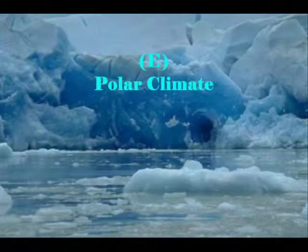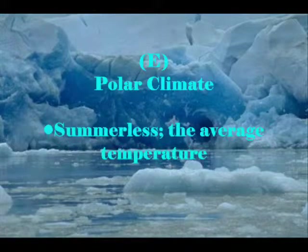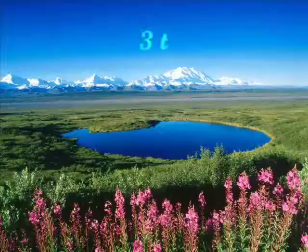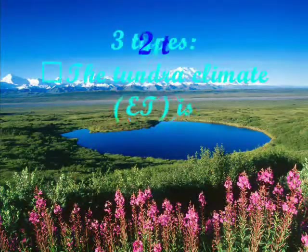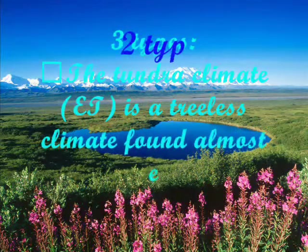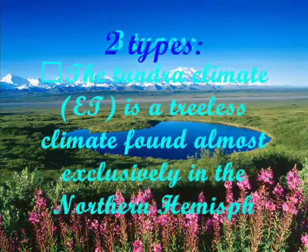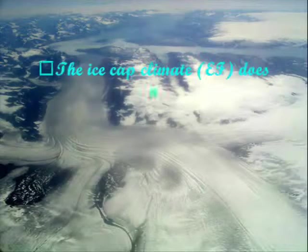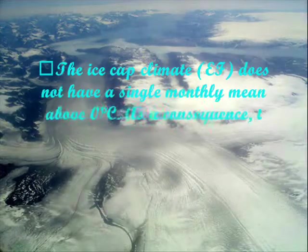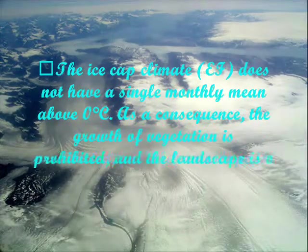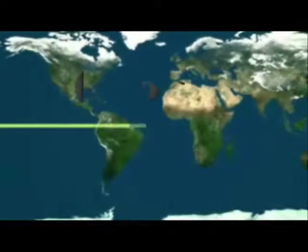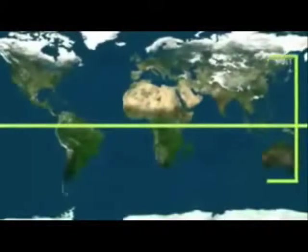Lastly is polar climate — a summerless climate where the average temperature of the warmest month is below 10 degrees Celsius. Two types are: first, the tundra climate, a treeless climate found almost exclusively in the northern hemisphere. Second is the ice-capped climate, which does not have a single monthly mean above 0 degrees Celsius. As a consequence, the growth of vegetation is prohibited and the landscape is one of permanent ice and snow. While most of the vegetation on Earth is north of the equator, the summer months see an increase in plants and therefore a decrease in carbon dioxide.